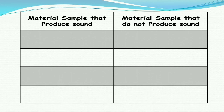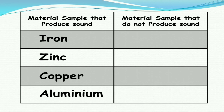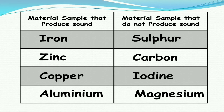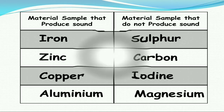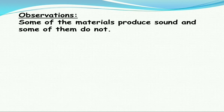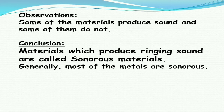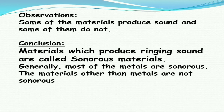From the experiment, we can observe that some materials produce a ringing sound and some do not. Iron, zinc, copper, and aluminium make a ringing sound when dropped on the ground. Sulfur, carbon, iodine, and magnesium do not produce a ringing sound. Conclusion: materials which produce a ringing sound are called sonorous materials. Most metals are sonorous in nature, while materials other than metals are generally not sonorous.